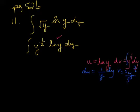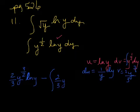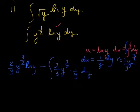Formula says it's u times v. So I have two-thirds y to the three-halves times the natural log of y. That's u times v, it's just in a different order. Minus v times du. So I have two-thirds y to the three-halves times one over y dy.